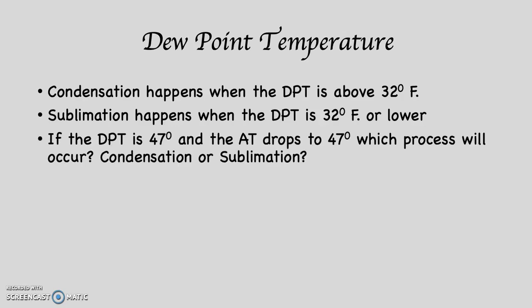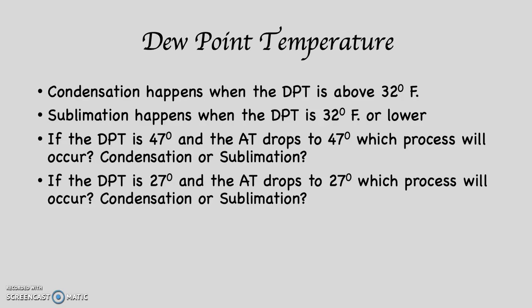If the dew point temperature is 47 degrees and the air temperature drops to 47 degrees, which process will occur — condensation or sublimation? Condensation, because 47 is a higher number than 32. If the dew point temperature is 27 and the air temperature drops to 27 degrees, which process will occur? Sublimation, because 27 is at or below 32 degrees. When we get to the next video, we are going to begin to see the visual manifestations of condensation and sublimation. But these are the principles — these first few videos lay out the principles you have to wrap your head around to get what happens next.